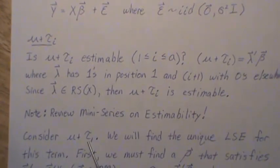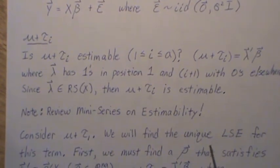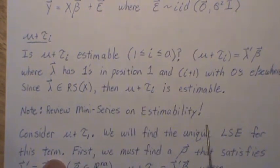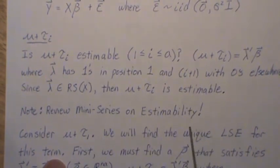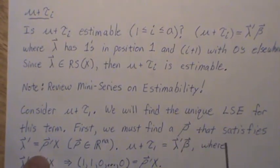Let's consider the first treatment group effect, μ + τ₁. We want to find the unique least squares estimator for this term. This word right there is so mind-bogglingly cool or impressive. First, we must find a row that satisfies this.